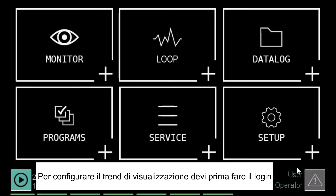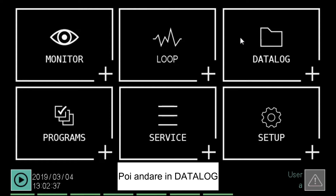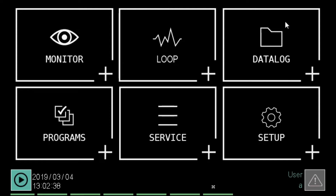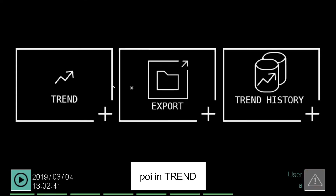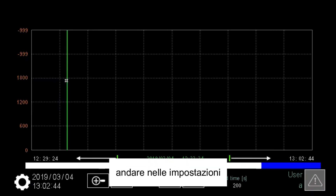To configure the trend visualization, you need first to log in. Then go to Datalog, then to Trend, and go to Settings.